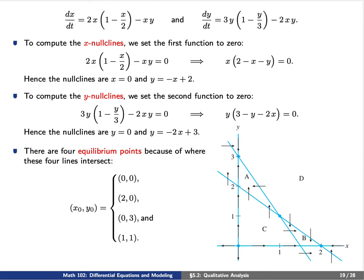These lines intersect at exactly four points. The vertical line x equals 0 intersects either the horizontal curve y equals 0 or the curve y equals negative 2x plus 3. There's another intersection at (0, 2), but this is the intersection of x equals 0 with the x-nullcline y equals negative x plus 2, so we don't consider it as an equilibrium point — equilibrium points only correspond to x-nullclines intersecting y-nullclines. So by looking at the graph, there are only four such points.